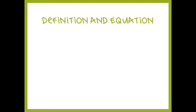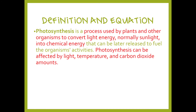We will begin with the definition and the equation. Photosynthesis is the process that plants use to convert the light energy from the Sun into chemical energy. The purpose of photosynthesis is to make food — all the plant wants to do is make food, which is glucose. Photosynthesis can be affected by light, temperature, the amount of water, and the carbon dioxide they receive.